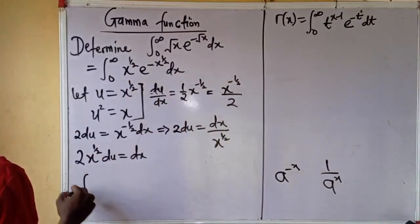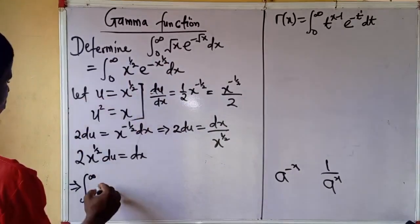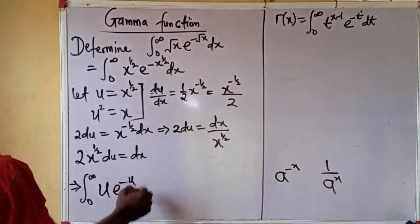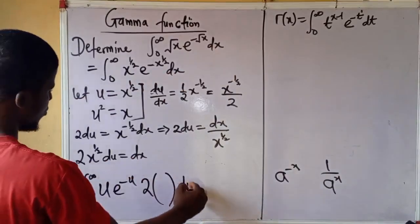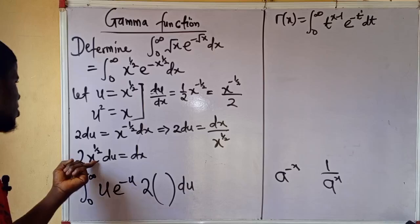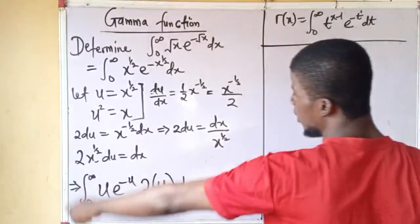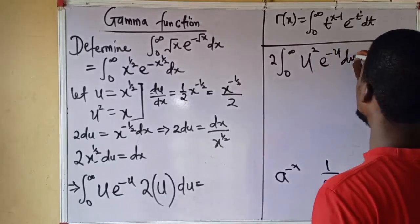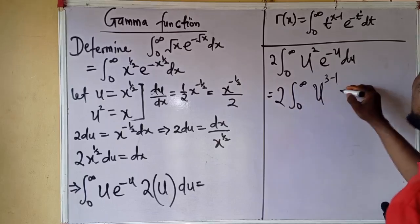So the modified integral is the integral from 0 to infinity. The square root of x, which is x to the power of 1 over 2, equals u. Then e to the power of minus u. And dx equals 2u du. Substituting, u times u gives u squared, so we have 2 times the integral from 0 to infinity of u squared times e to the power of minus u, du.